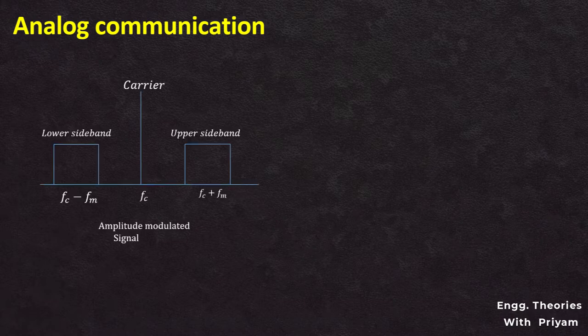In this lecture on analog communication, we will understand what a ring modulator is and how it functions to generate a DSBSC modulated signal. We have already seen that a DSBSC signal has an upper sideband signal, a lower sideband signal, and the carrier signal is suppressed. The DSBSC signal only contains two sidebands.